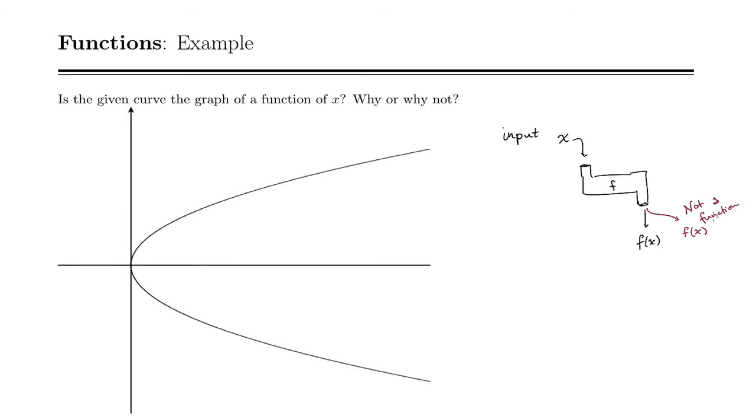So this is what the vertical line test does. We look at vertical lines, and if there's any vertical line that touches the curve more than once - you can see right here is an example of a vertical line that touches the curve twice. That's two different outputs for a single input, so this is not a function of x.